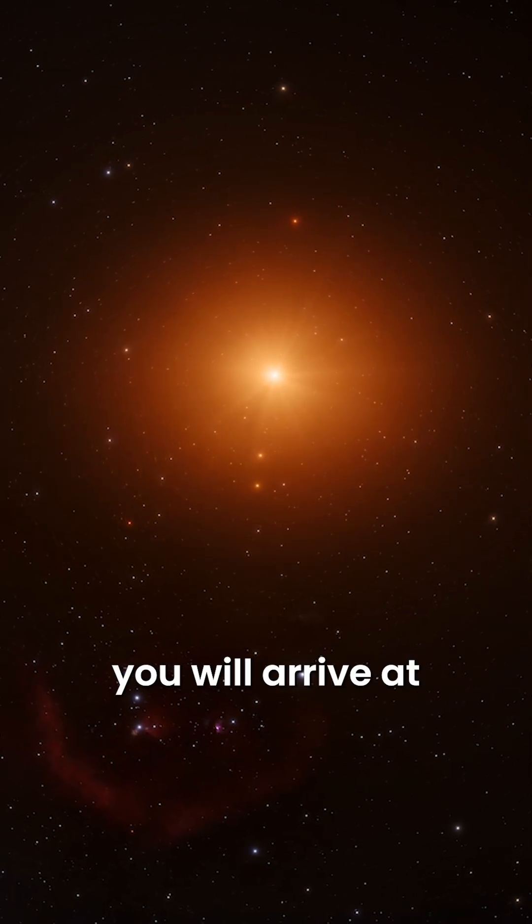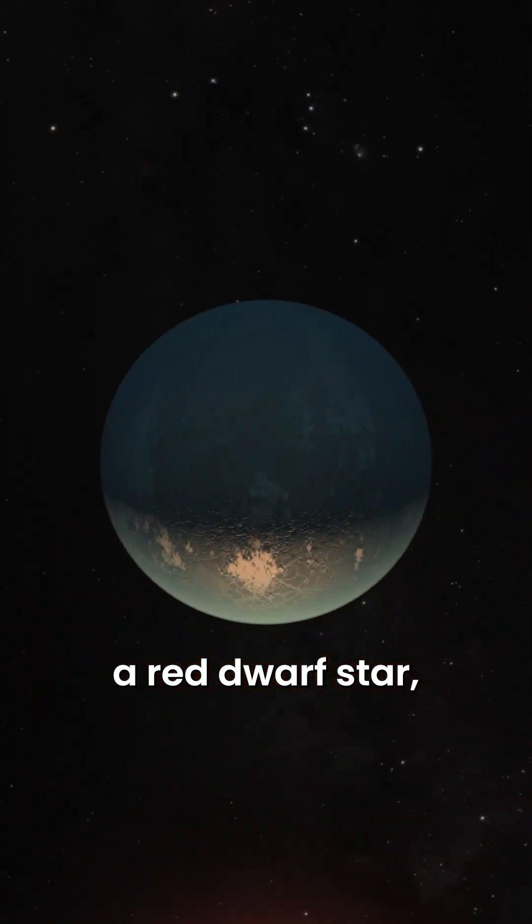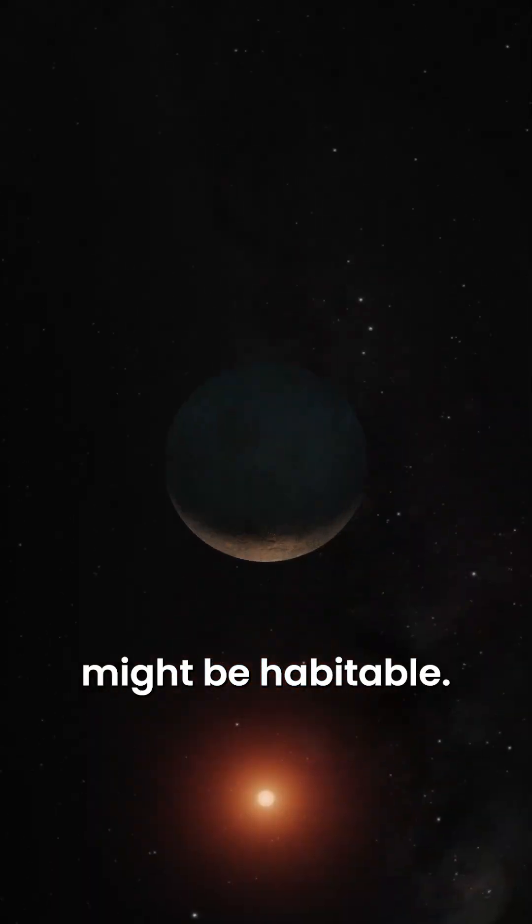After 40 seconds, you will arrive at TRAPPIST-1, a star system containing seven Earth-sized planets orbiting a red dwarf star, among which three might be habitable.